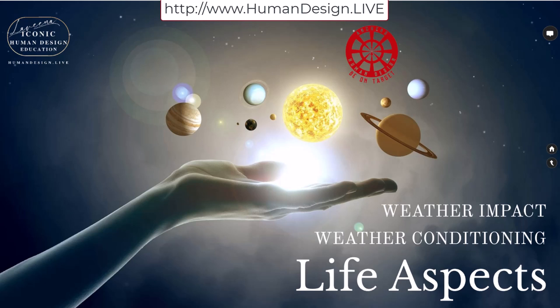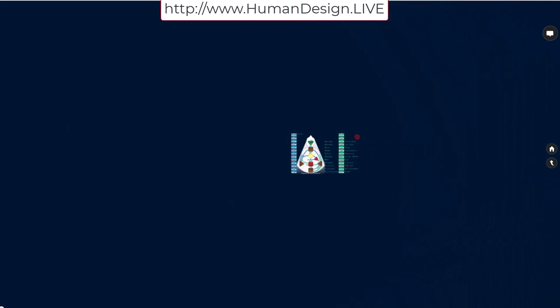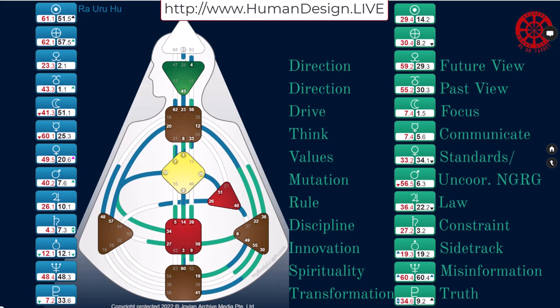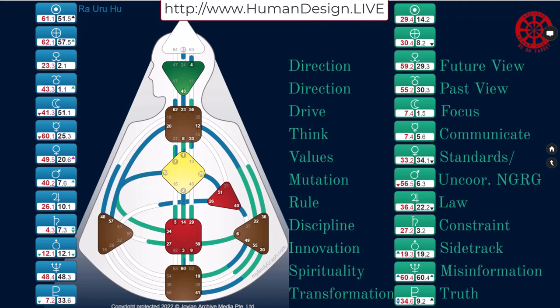So we're going to cover how to describe the planets or life aspects and how they influence us today. We're going to be adding on the rave psychology terms in our descriptive languaging of the transiting program. Here are some really basic words that you can use when you're describing these things to your client.